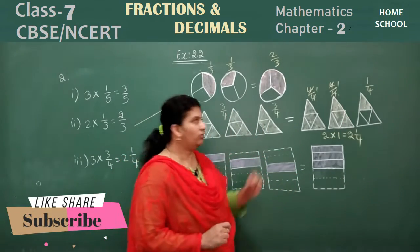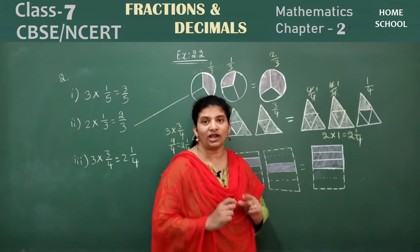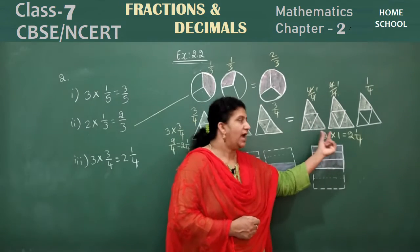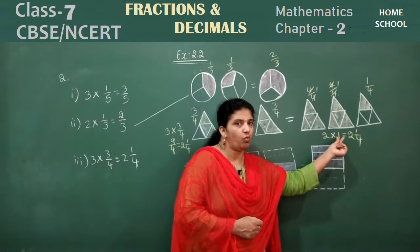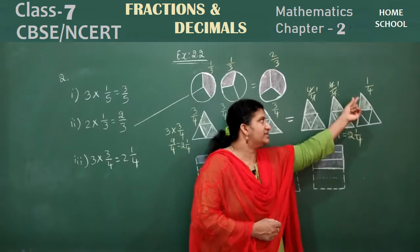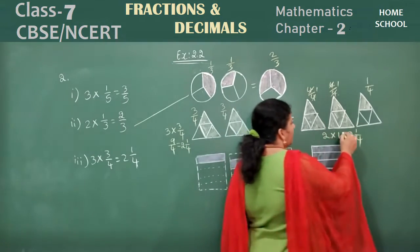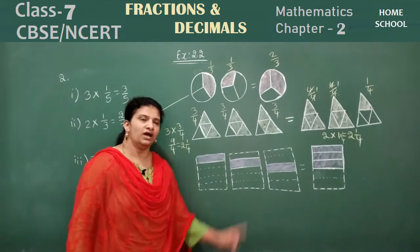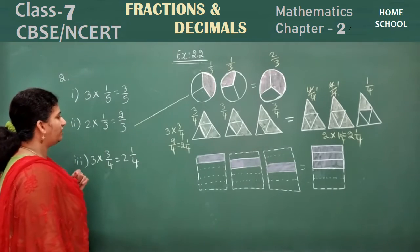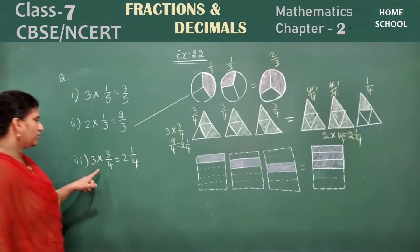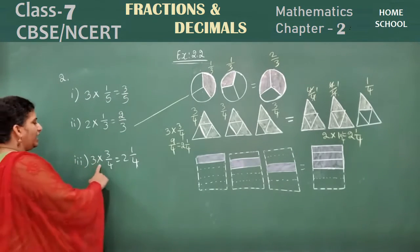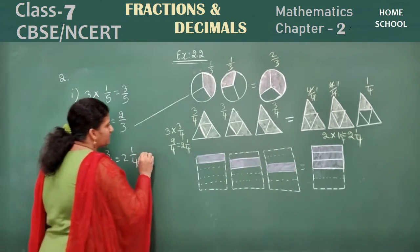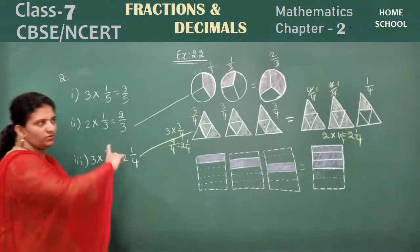Be careful — don't write 1 into 1 is 1. How many figures are there? 2 figures with fraction 1, so 2 into 1 is 2. Then one more figure with 1 by 4. So the answer is 2 and 1 by 4. Match here: 3 into 3 by 4 equals 2 and 1 by 4.